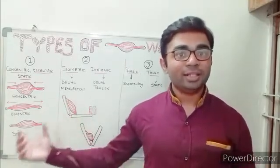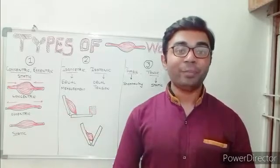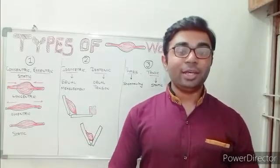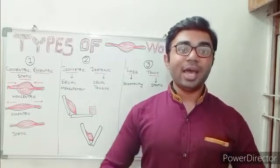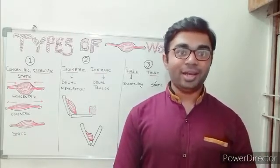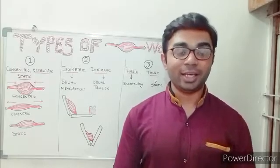As you can see, isometric is somewhat related with the static type of muscle work. Economically, isometric or static type of muscle work is easier to perform, but it causes muscle fatiguing because of hindrance of circulation inside the muscle.